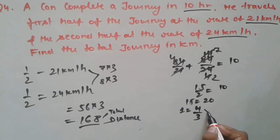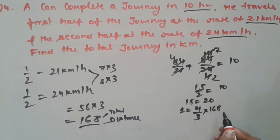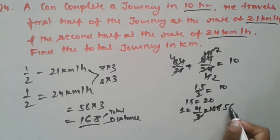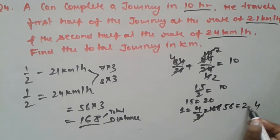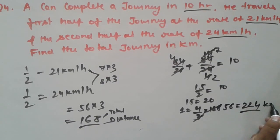So the value of 168 units multiplied by 4/3 gives 224. So 224 km is the total distance in kilometers.